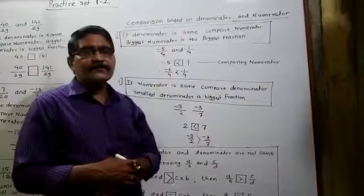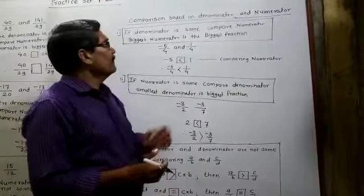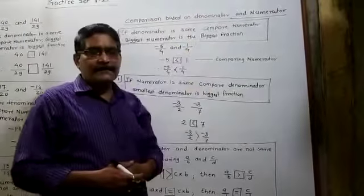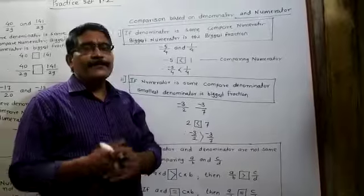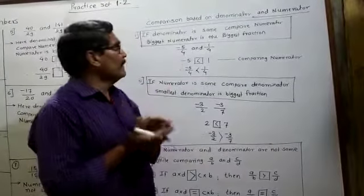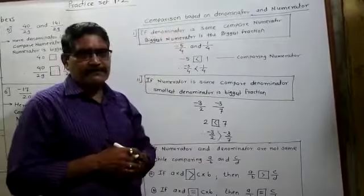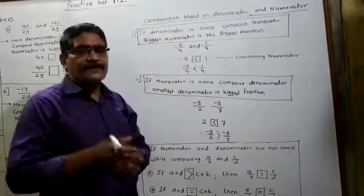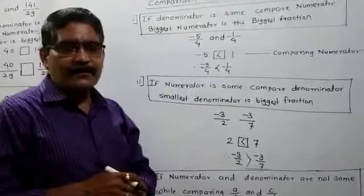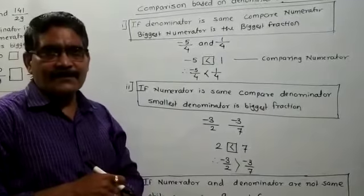I will give you some rules for comparing fractions based on the denominator and the numerator. You have to do the comparison based on numerator and denominator. I will cover three cases: if the denominator is the same, if the numerator is the same, and if the numerator and denominator are both different — and explain the rule for each case.